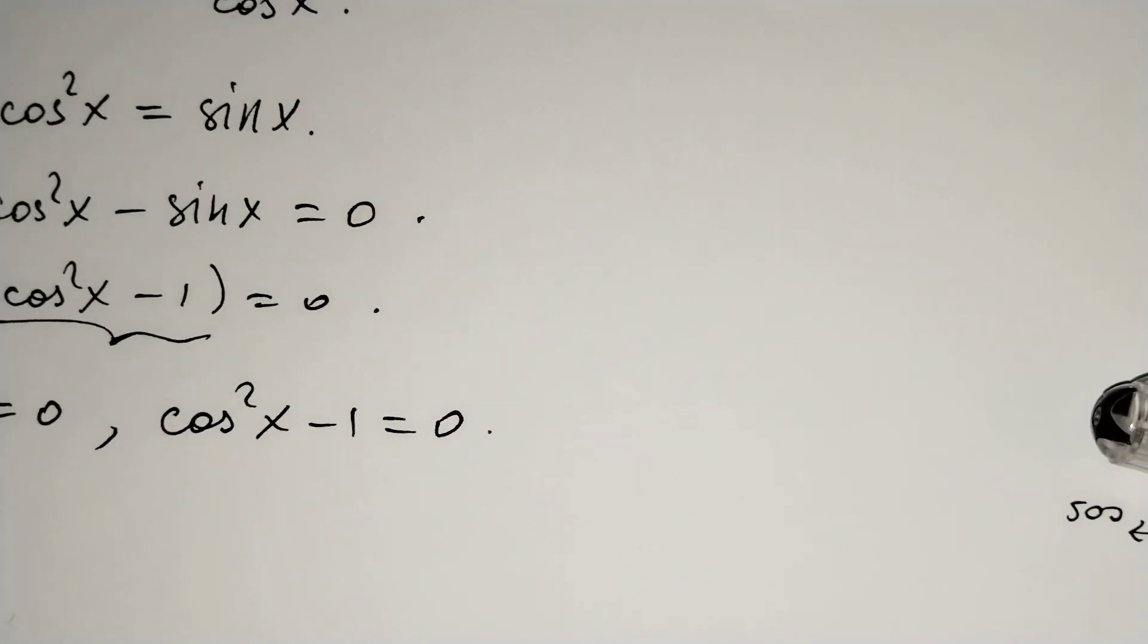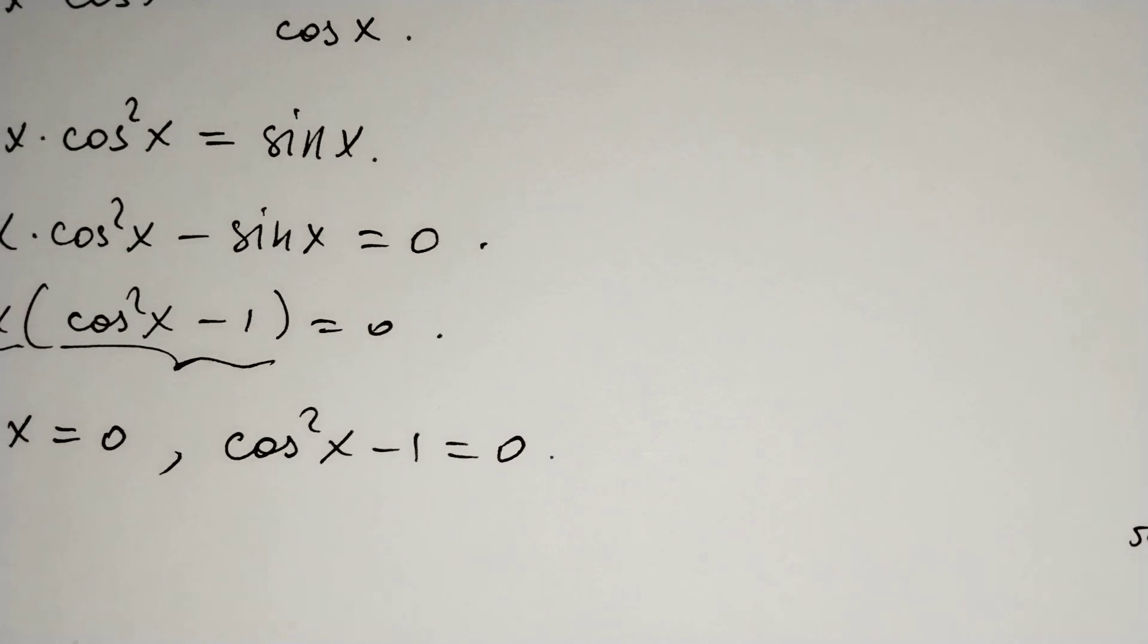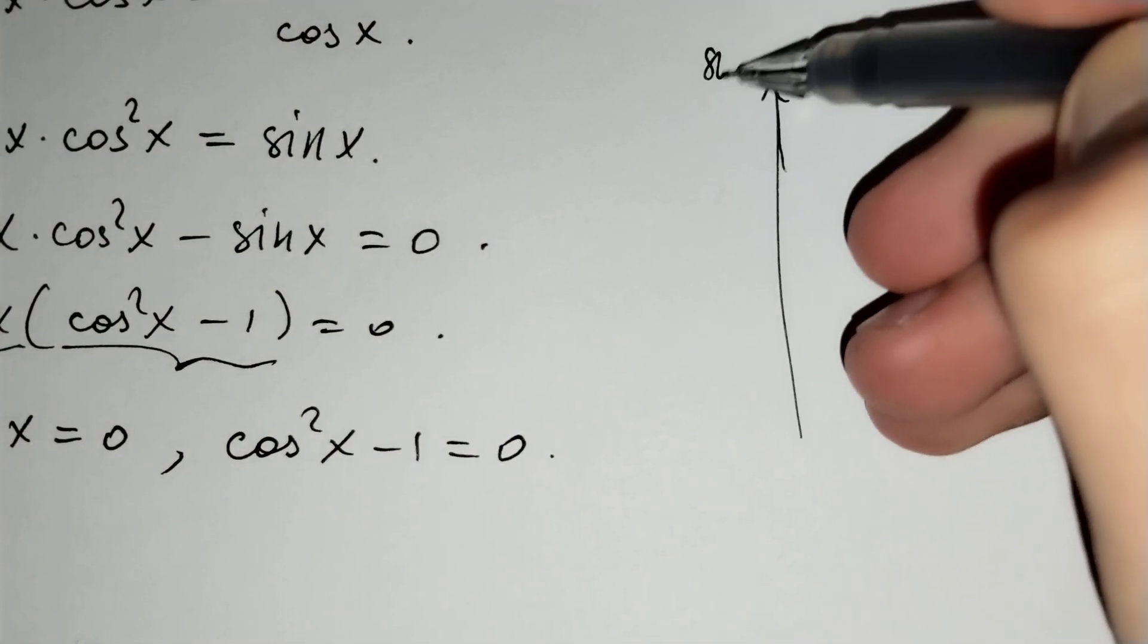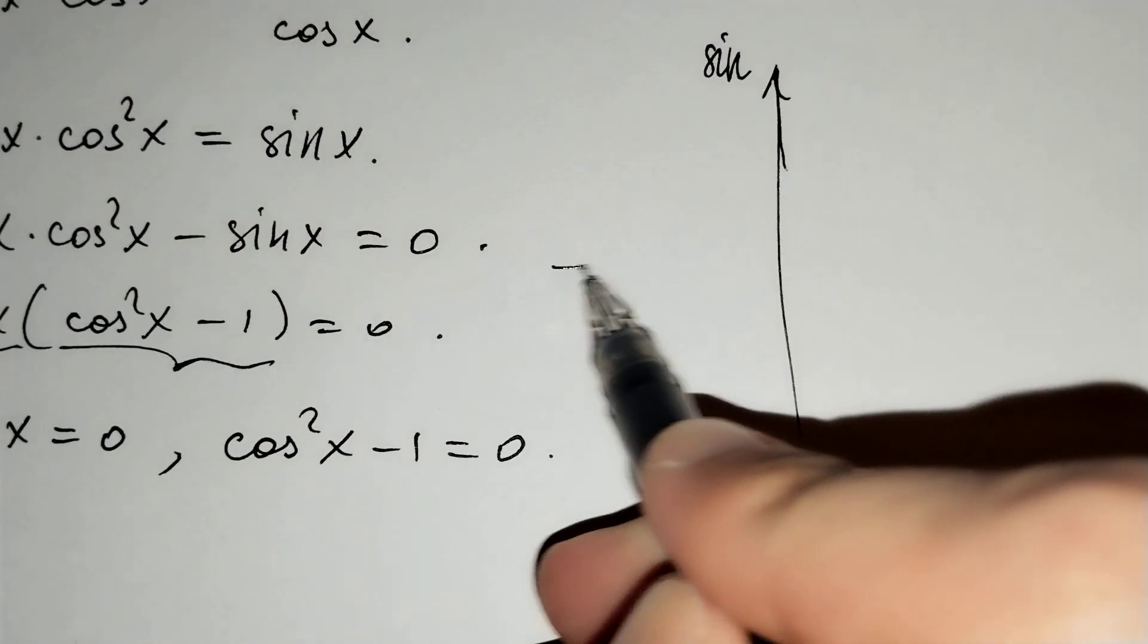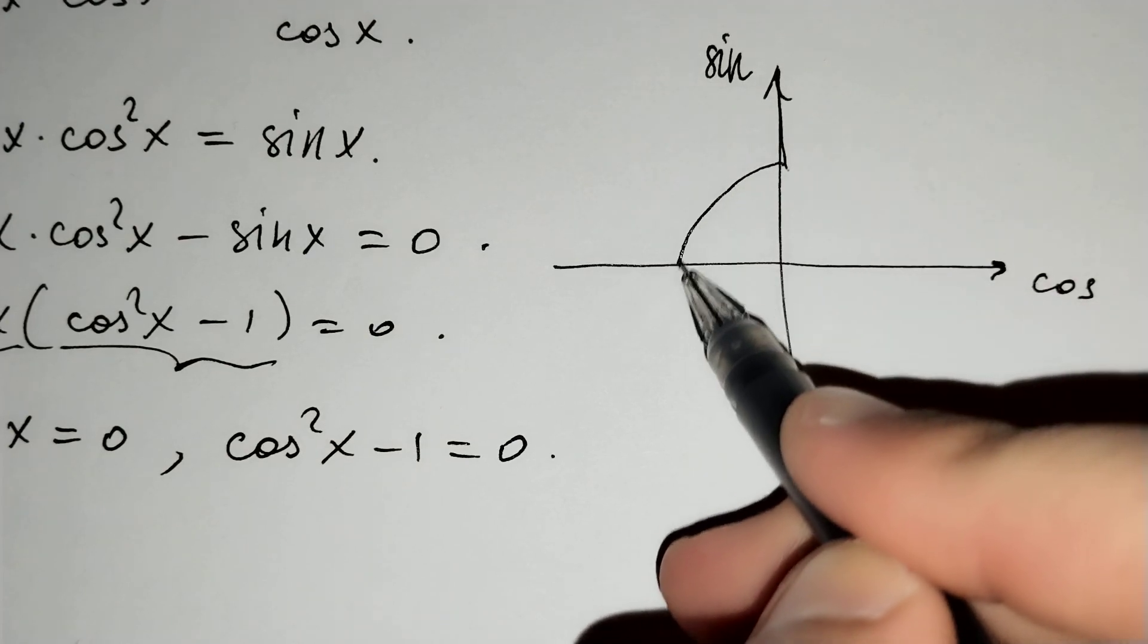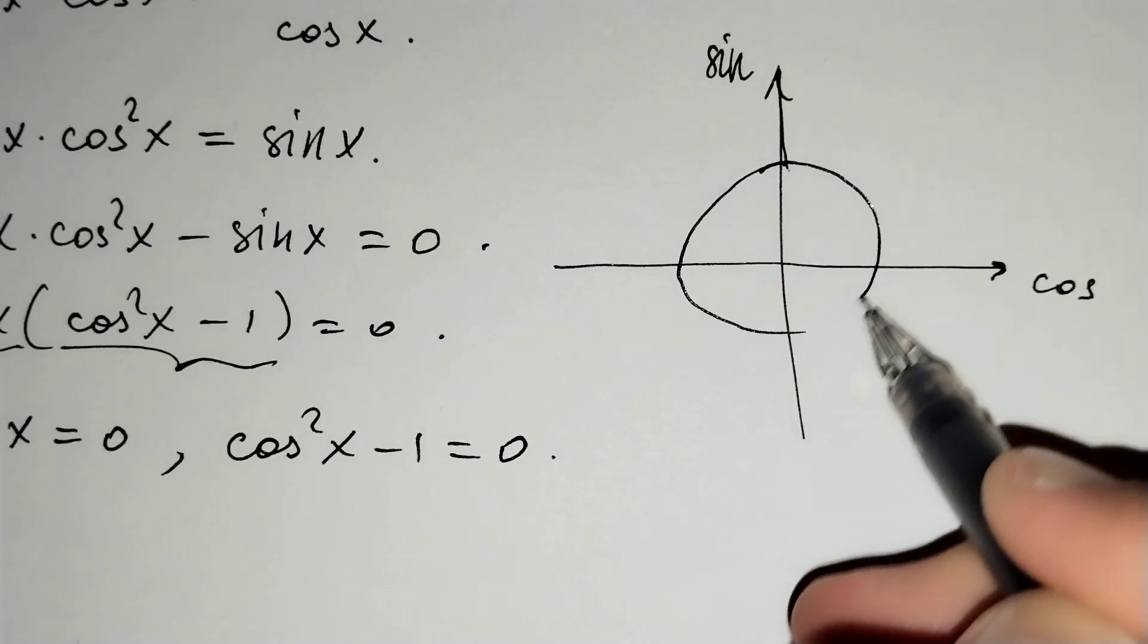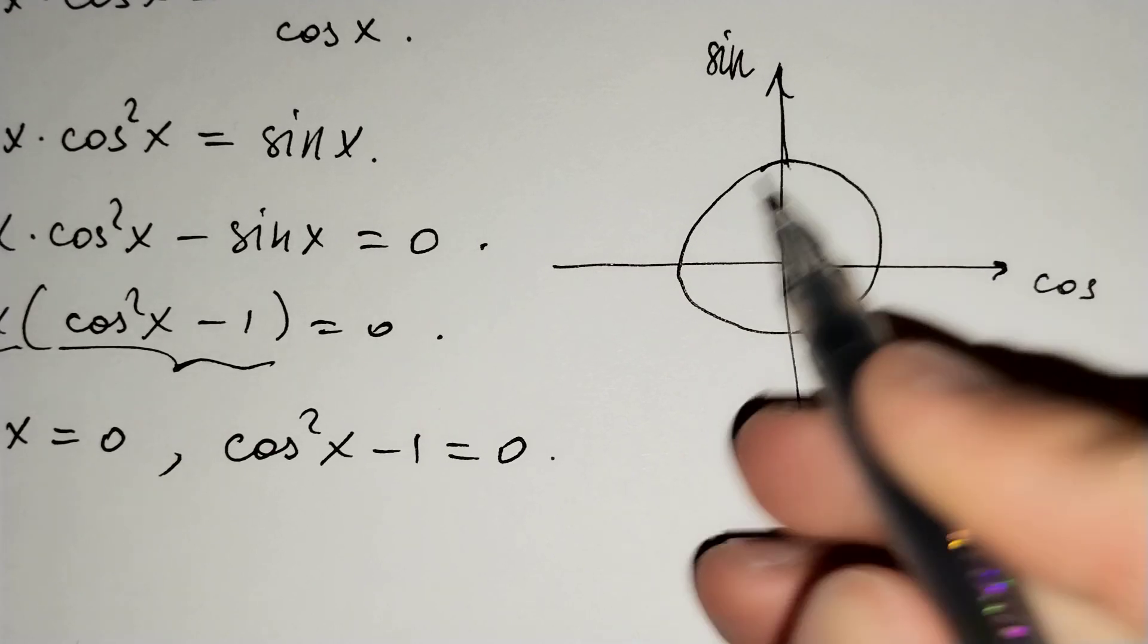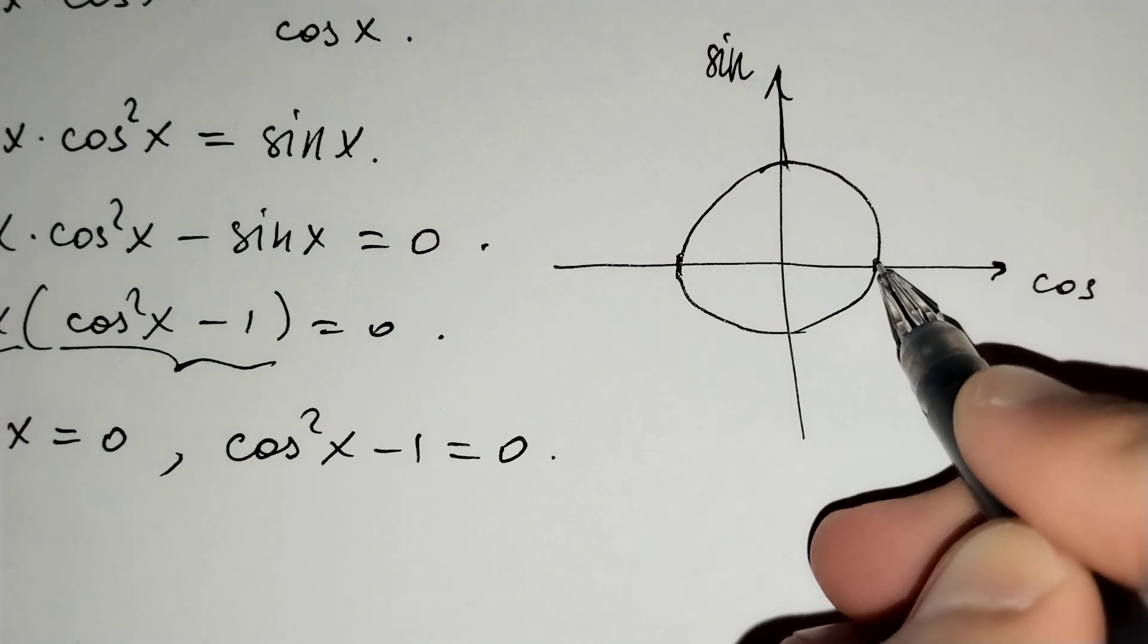We have a rectangular coordinate system. This is the sine axis and this is the cosine axis. And we have the unit circle here. Sine equals 0 at these dots.